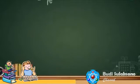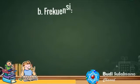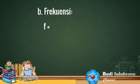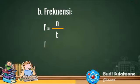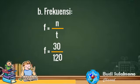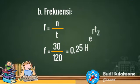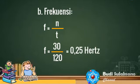Untuk menghitung nilai frekuensi, kita gunakan rumus F sama dengan N per T. F sama dengan 30 per 120, sehingga diperoleh nilai F sama dengan 0,25 Hz.